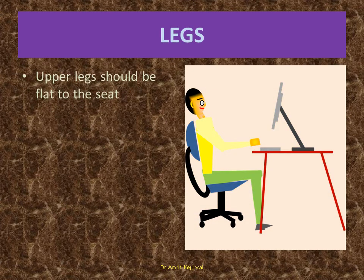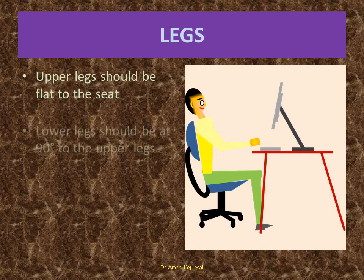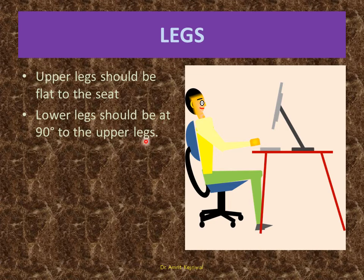Legs continued: Upper leg should be flat to the seat. Lower legs should be at 90 degrees to the upper legs.